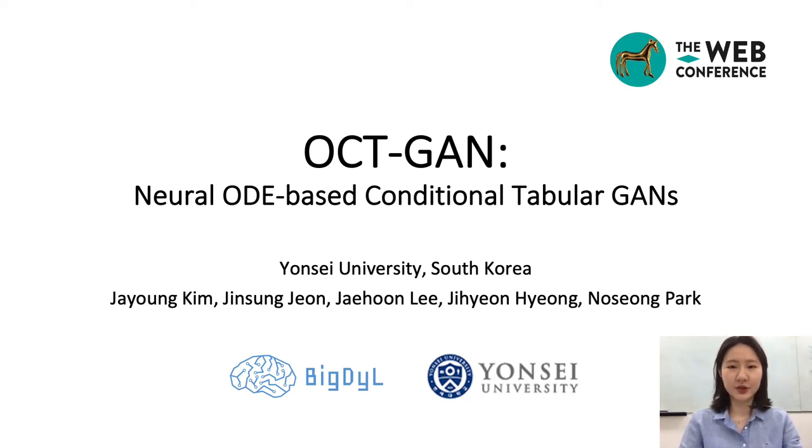Hi, I'm Ja-young Kim from Yonsei University. In today's talk, I'd like to talk about Authentic N, which is a generative adversarial network model that improves the performance of synthesizing tabular data using neural ordinary differential equations.